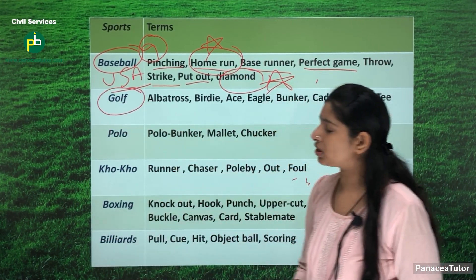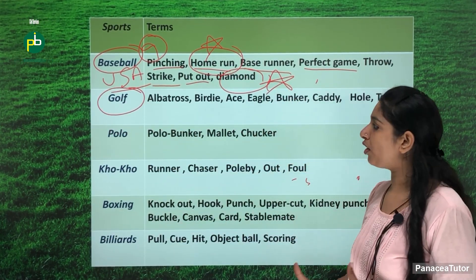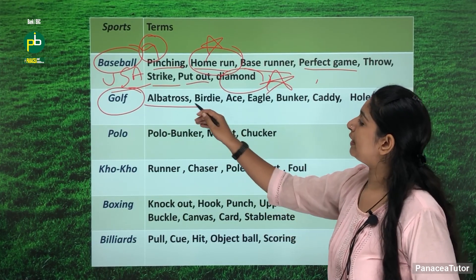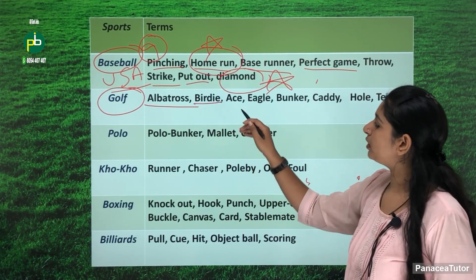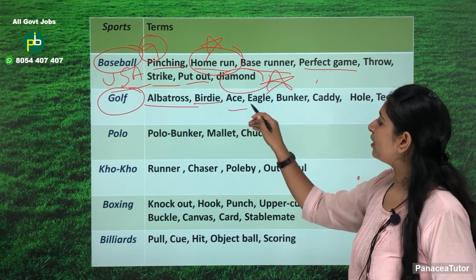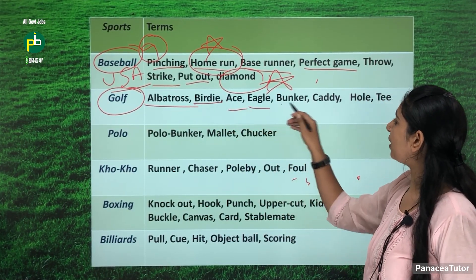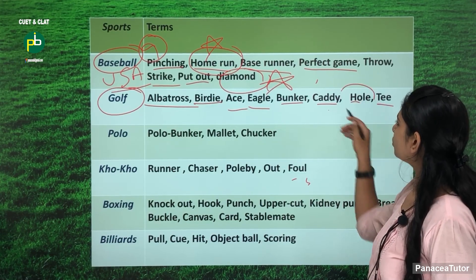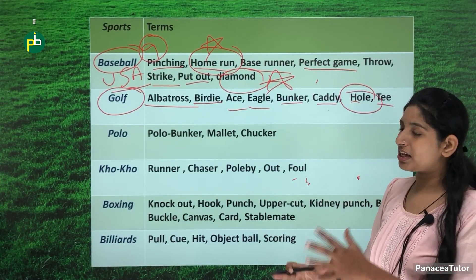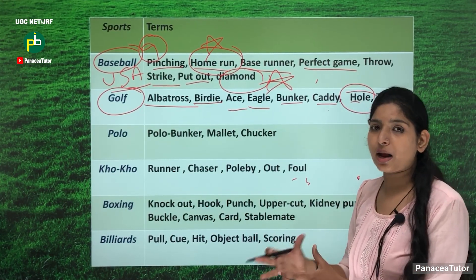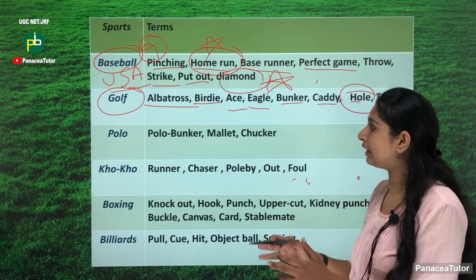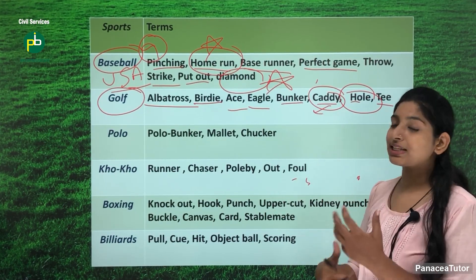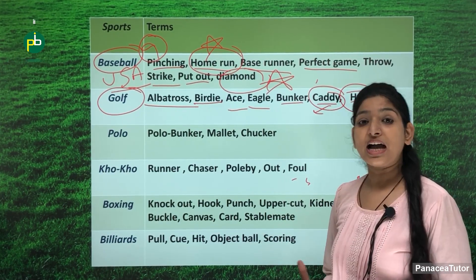Next is golf and golf-related important terms: albatross, birdie, ace, eagle, bunker, caddy, hole and tee. Hole is where you target to strike the ball, and caddy refers to the person who carries equipment and assists the golfer.